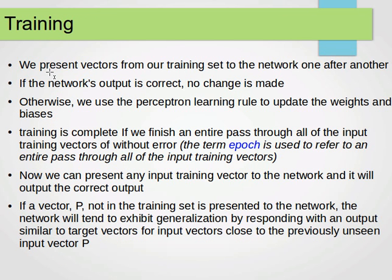Now, again, in plain English, we present vectors from our training set to the network, one after another. If the network's output is correct, then no change is made. We don't need to change weights and bias. Otherwise, we use the perceptron learning rule to update the weights and bias. Training is complete if we finish an entire pass through all the input training vectors without error. So that's our stopping condition. If there's no error, the term epoch is used to refer to an entire pass through all the input training vectors.